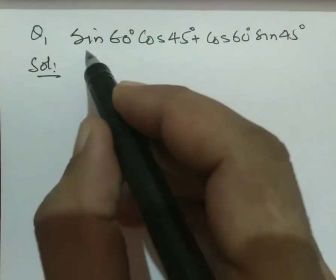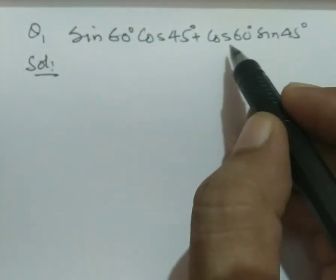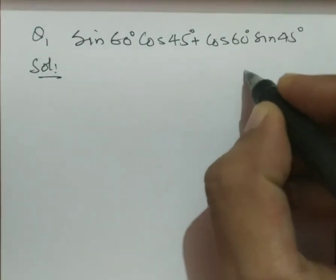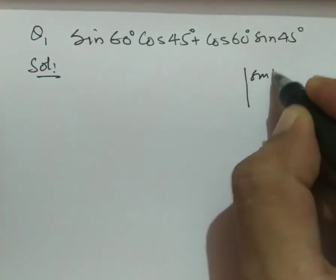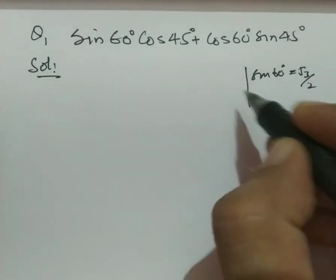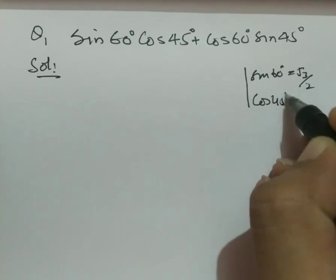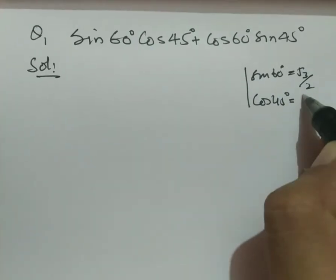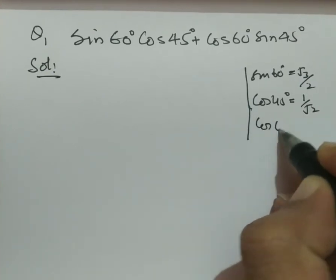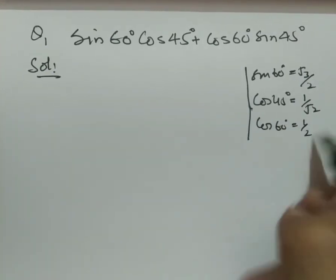We know the value of sin 60, cos 45, cos 60, and sin 45 from the trigonometry table. That is, sin 60 degrees is root 3 over 2, and cos 45 degrees is 1 over root 2. Then cos 60 degrees is 1 over 2.